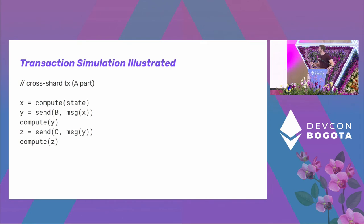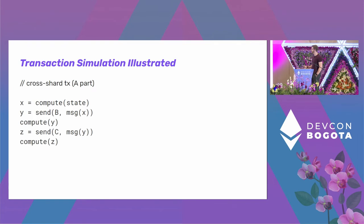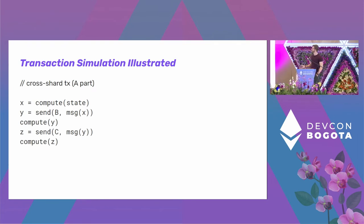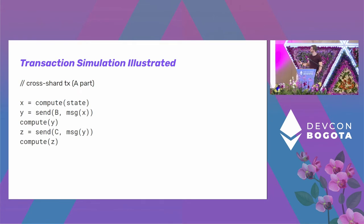To make things clearer: here's an abstract cross-shard transaction. It computes things on some state — which might change — then sends a message to shard B that depends on the result of that computation. That message will have a result; we compute something based on that result and send it to shard C, then do more computation. This illustrates the dependency we have: we can depend on results from one shard, and send computed results to another shard.